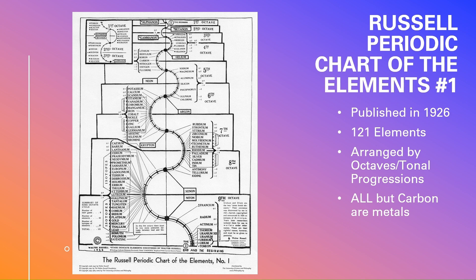Also to note, every element Walter Russell considered to be metallic, except carbon, which is equally male and equally female, or bisexual as he called it. And that would mean that carbon is the only non-metal in this chart.